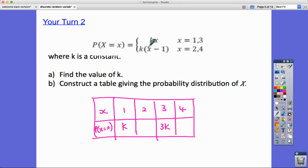And if I actually look at 2 and 4, I've got a slightly different expression to substitute into. So 2 goes in here. 2 minus 1 is 1, so that will give me k. And 4 goes in here. 4 subtract 1 times k is 3k. Part A, find the value of k. I know that all of these will add up to 1. So k plus k plus 3k plus 3k equals 1. We've got 8k equals 1. So k is equal to one-eighth.